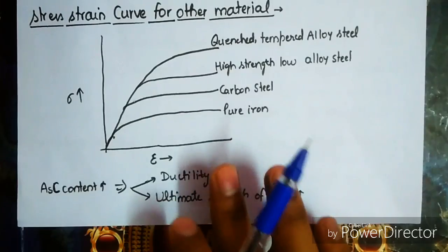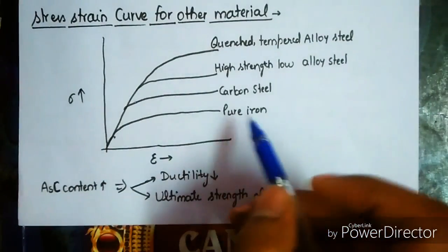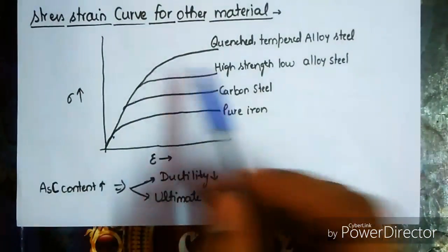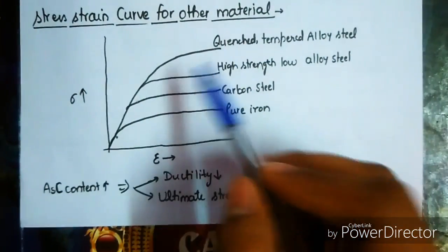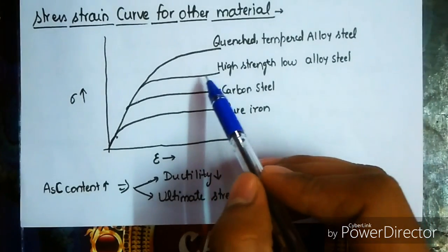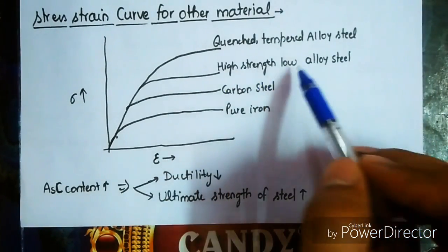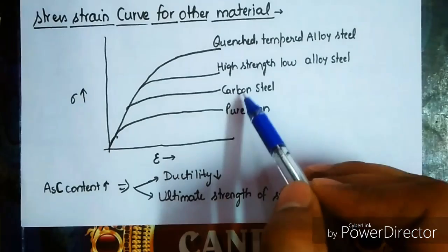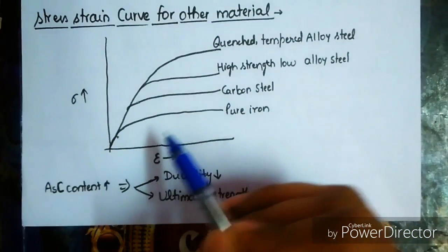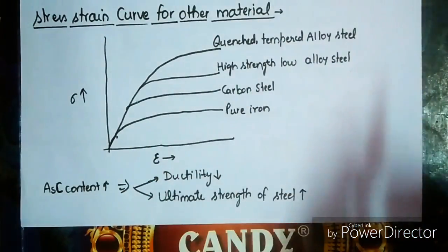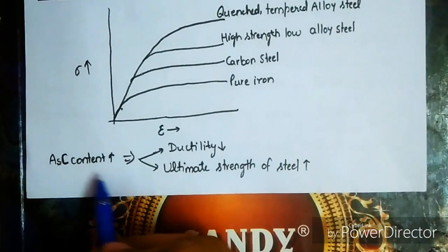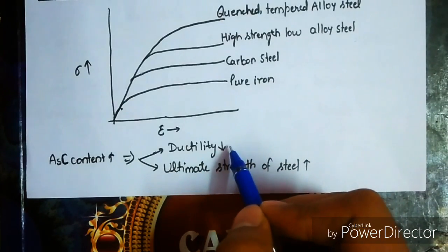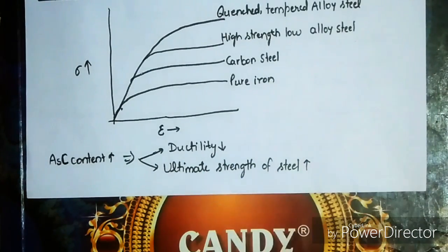For other materials, the stress-strain curves differ. The highest curve is for quenched or tempered alloy steel, followed by high-strength low-alloy steel, then carbon steel, and the lowest is for pure iron. As carbon content increases, ductility decreases and the ultimate strength of steel increases.